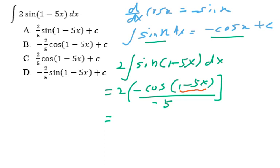Simplify the equation - negative and negative can be simplified. You will be able to get 2 over 5 cosine(1 - 5x) plus c. So your answer will be c.